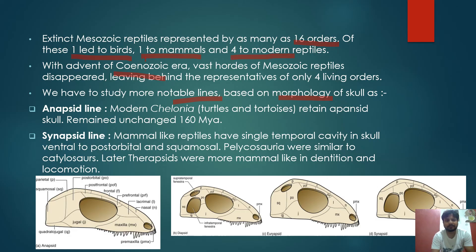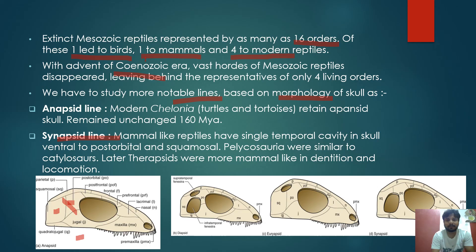Skulls are classified into four types based on temporal openings. Anapsida have no temporal opening in the skull — no temporal fossa is present between the squamosal and postorbital bones. Synapsida, the mammal-like reptiles, have a single temporal opening below the postorbital and squamosal bones, as seen in the diagram.